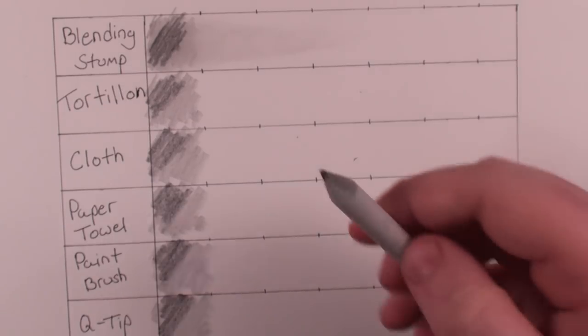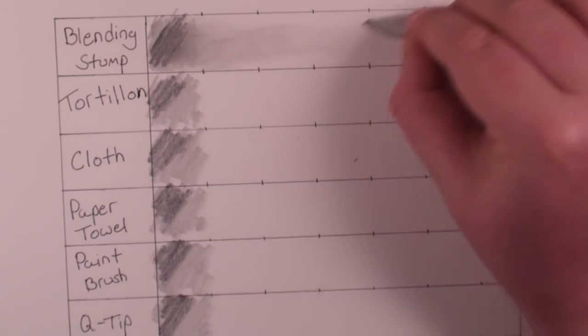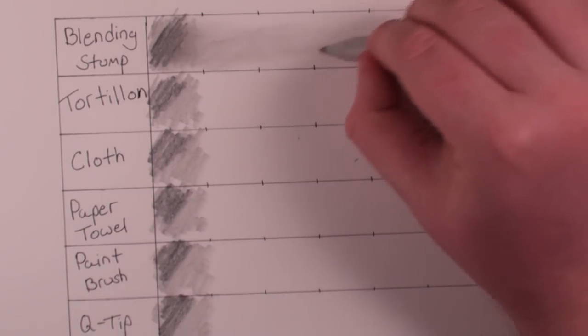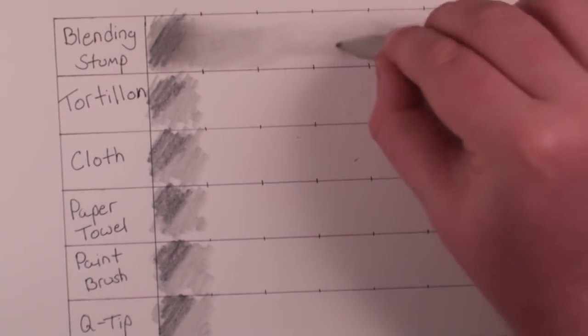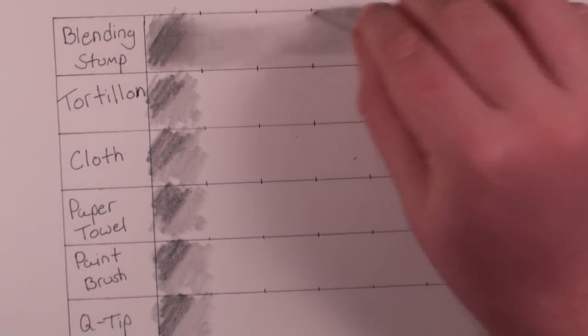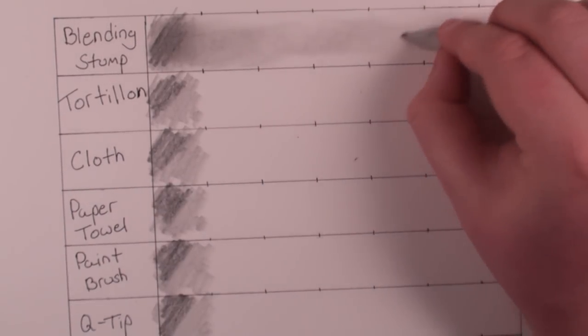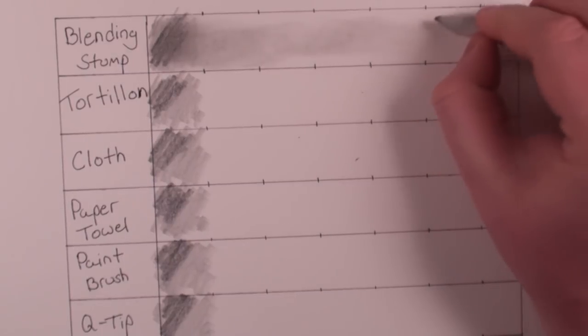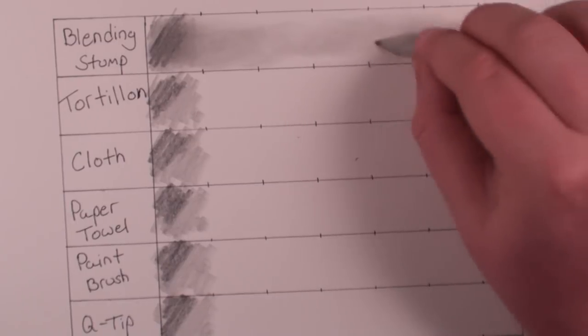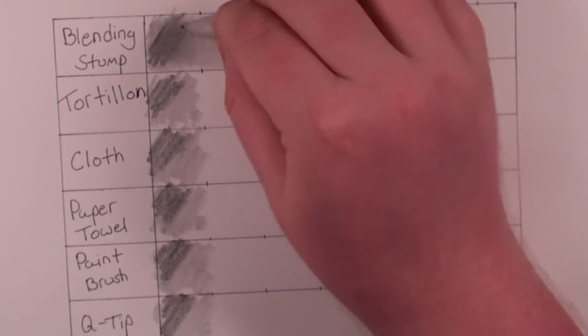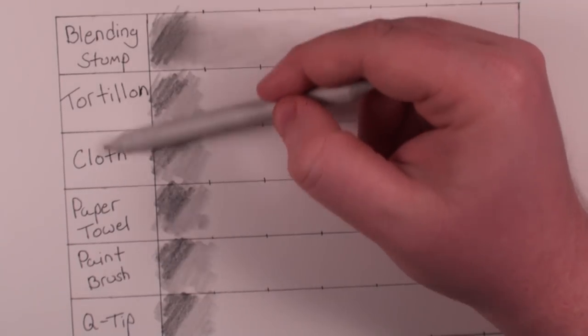All right, so let's try that again. You can probably clearly see how far this blending stump is allowing me to actually go. So what's nice about the blending stump is that it'll hold that graphite in there and you can use it as like a light toning utensil. So you can carry that blend really far with this, which is why this is what I will typically use most of the time.